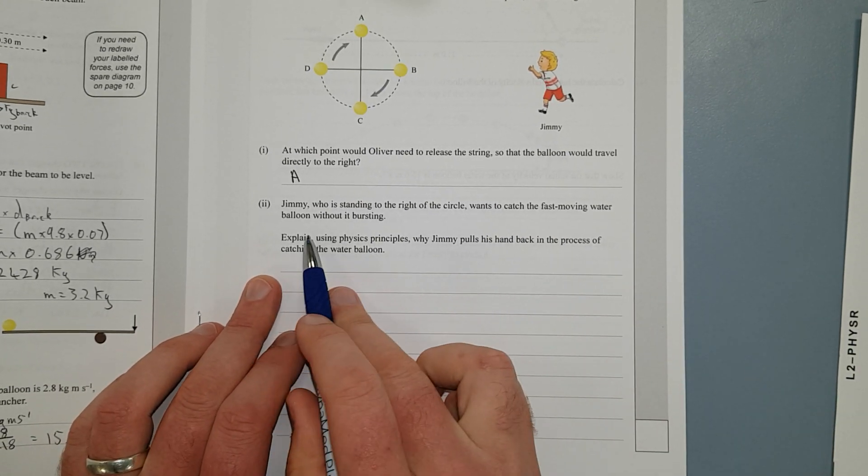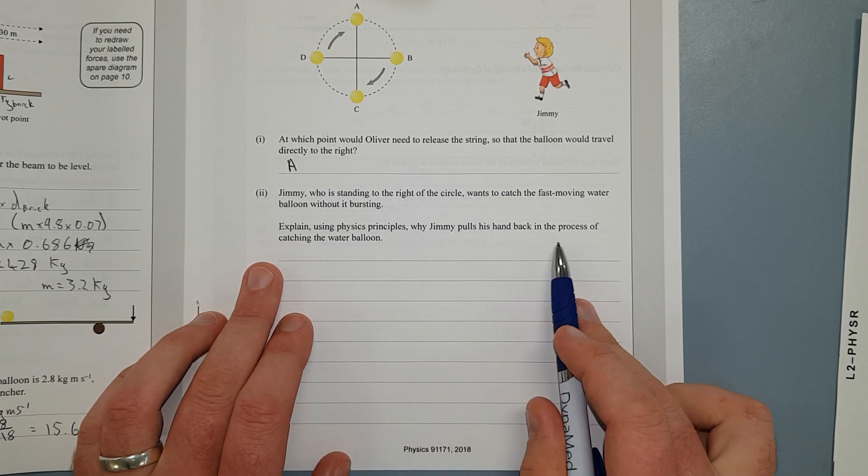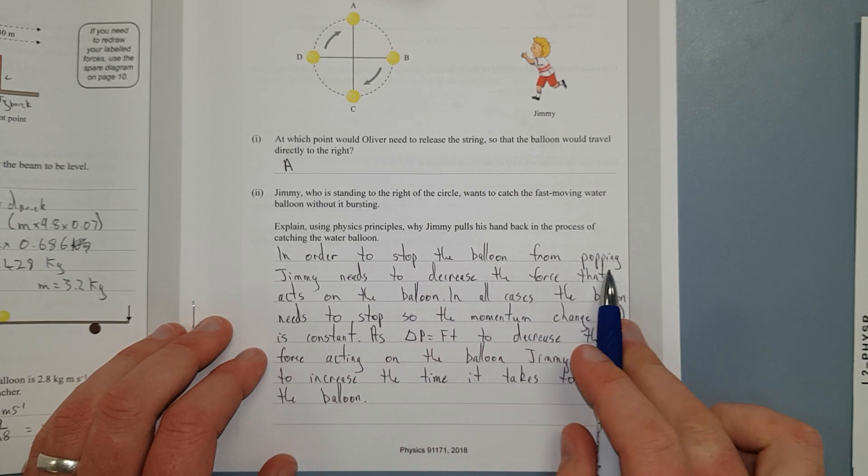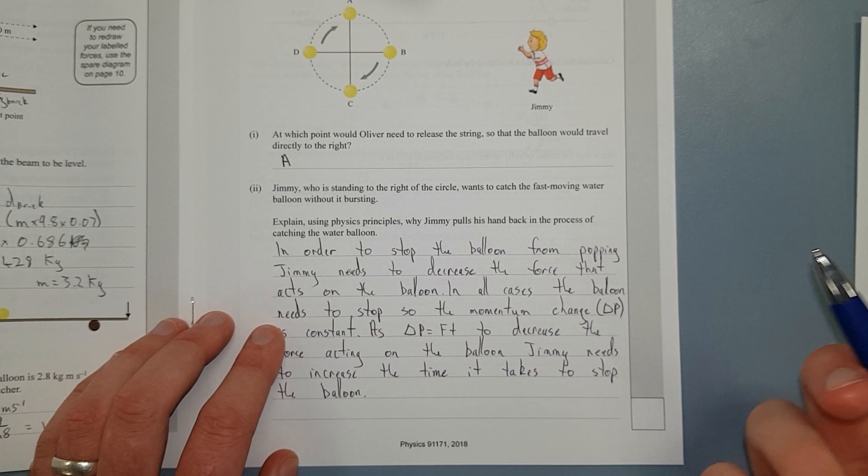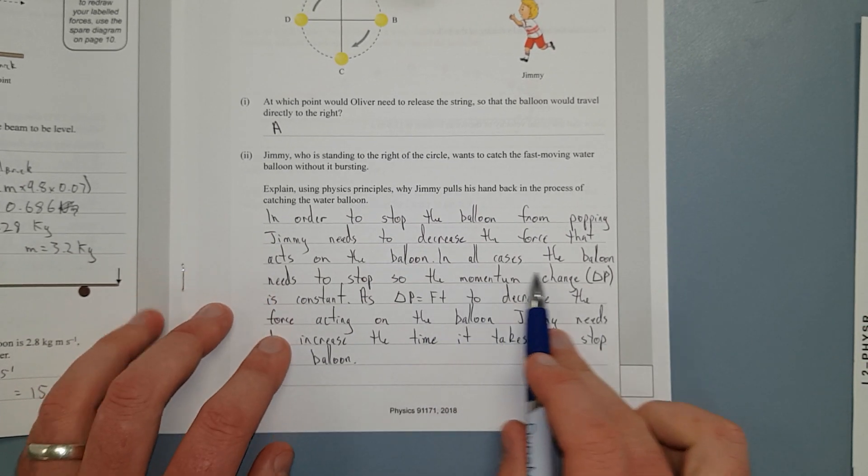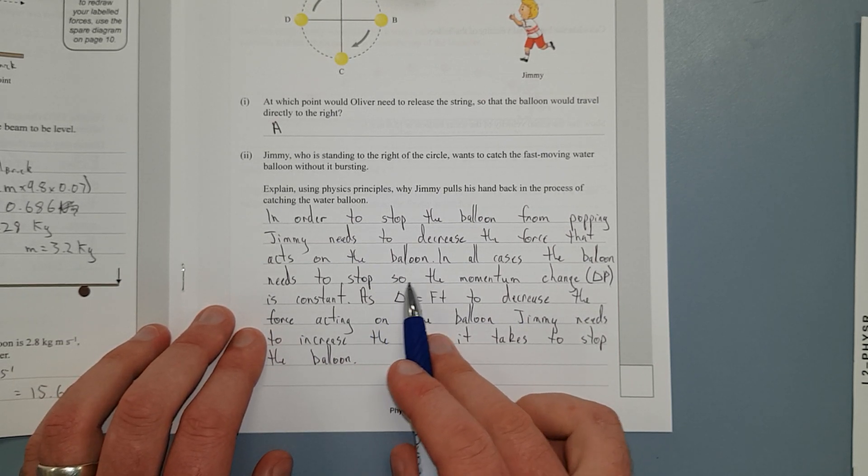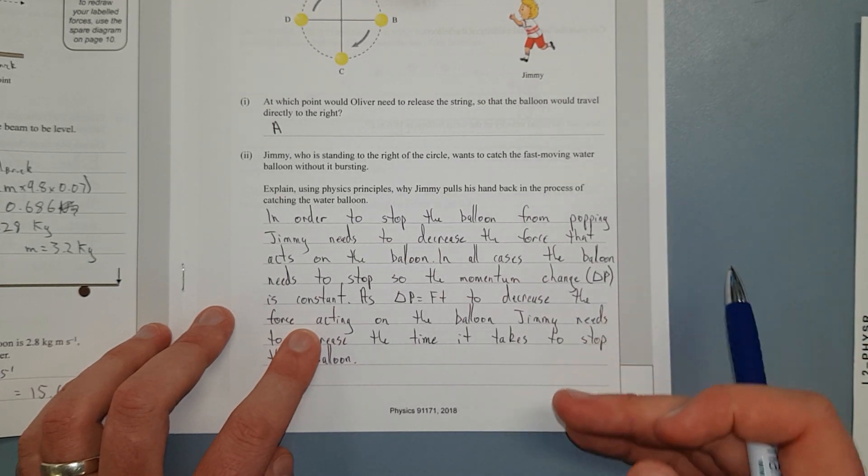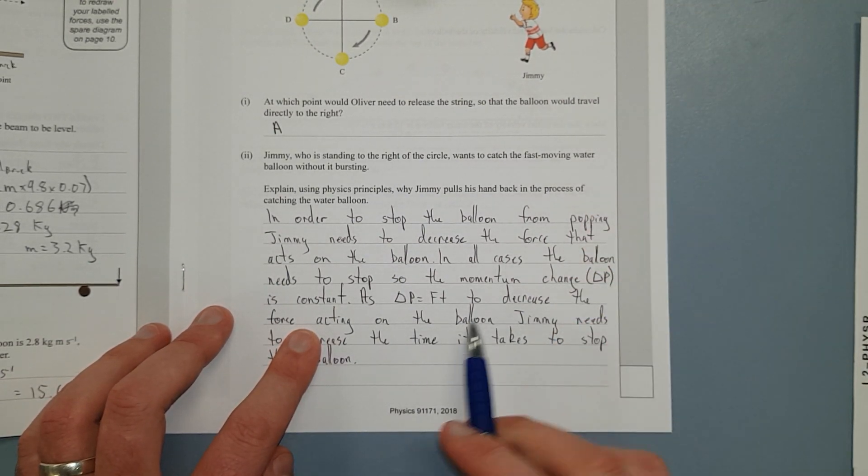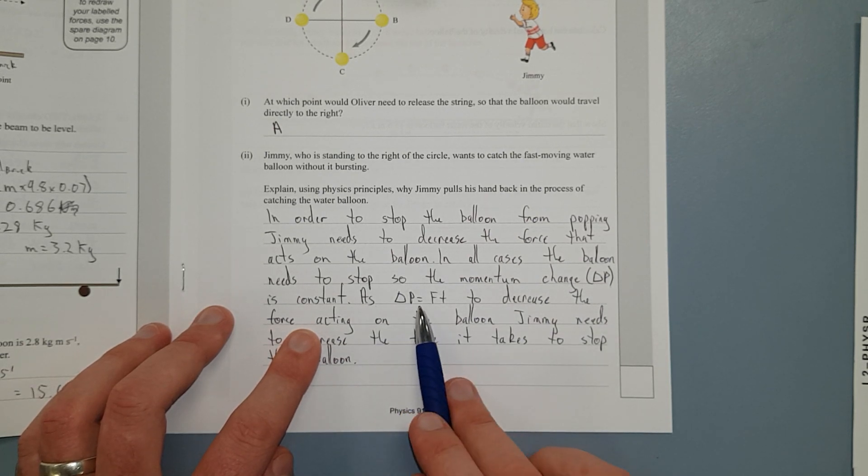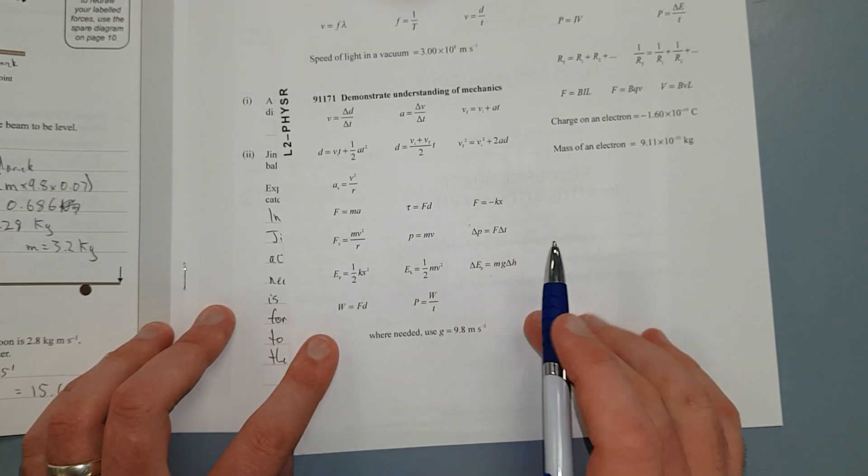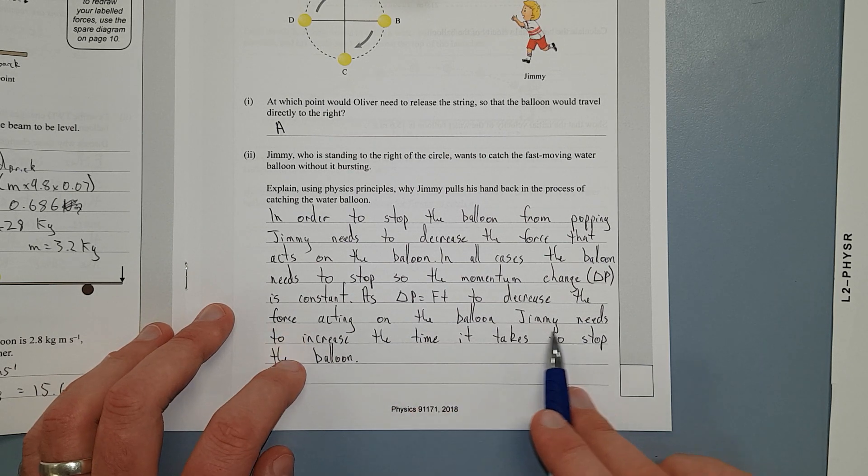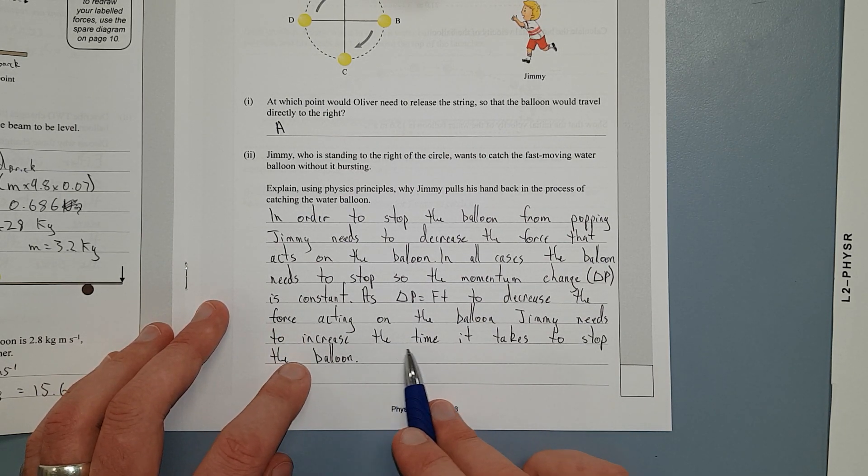Right, Jimmy who is standing at the right of circle wants to catch a fast moving water balloon without it bursting. Explain using physics principles why Jimmy pulls his hand back in the process of catching the water balloon. I'm going to pause the video, go over the answer, or write the answer and then go over it. Right, so what I've said is in order to stop the balloon from popping, Jimmy needs to decrease the force that acts on the balloon. That kind of makes sense, like in order to pop something you need to give it a whole bit of force. So in all cases the balloon needs to stop, it's a given, we're trying to stop the balloon. So the momentum change, I'm going to put delta P there, is constant. So this is what gets you to the excellence point, because the momentum change needs to go from whatever momentum it had to zero, because it's stopping. As the change in momentum, that's meant to be a delta triangle. Delta P equals the force times the time, that's just in your formula sheet there, we discussed that. I don't know why I put a capital P for that, I have no idea why I did that. It should be a lower case. To decrease the force acting on the balloon, Jimmy needs to increase the time it takes to stop the balloon.